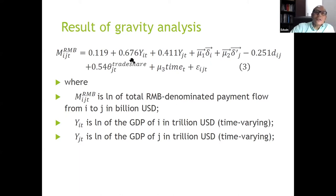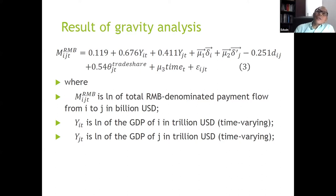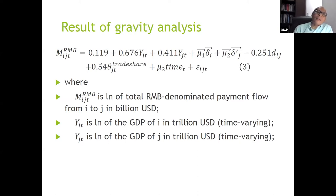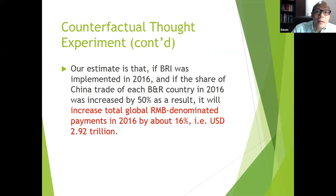My strategy is a thought experiment. The trade share means, for example, what percentage of Indonesia's total trade is with China. Suppose the trade share of Indonesia with China increases by a certain percentage. My thought experiment asks: suppose all BRI countries' trade share with China increases by 50% — how will that affect RMB payment flow in the aggregate?